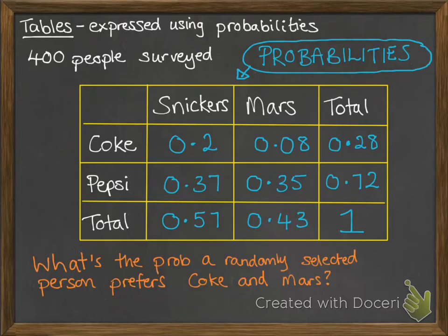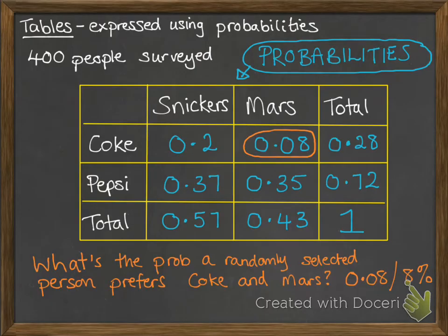Then we could have some questions like this. What's the probability that a randomly selected person prefers Coke and Mars? So you're going to read across the row for Coke and down the column for Mars, and where they come together, there's your answer. We've got a 0.08, or 8% chance, of a randomly selected person having chosen Coke and Mars.